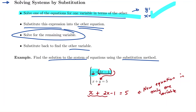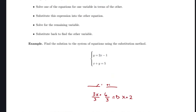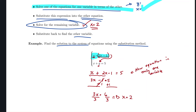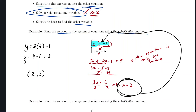Example using substitution: since one equation is already y equals 2x minus 1, step one is done. Substitute into the other equation: x plus (2x minus 1) equals 5. Combining gives 3x minus 1 equals 5, so 3x equals 6, and x equals 2. Then y equals 2 times 2 minus 1 equals 3. The solution is the coordinate point (2, 3).